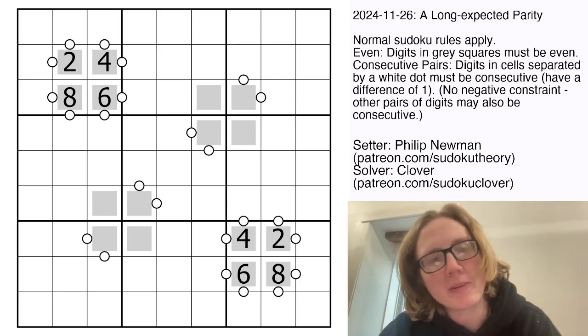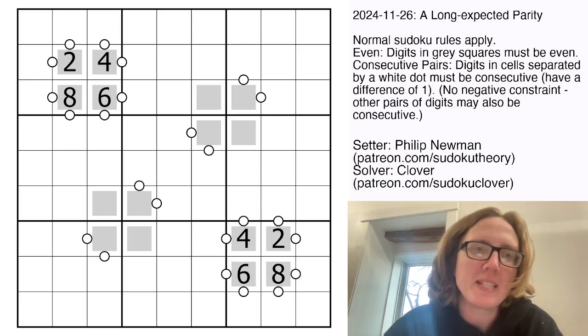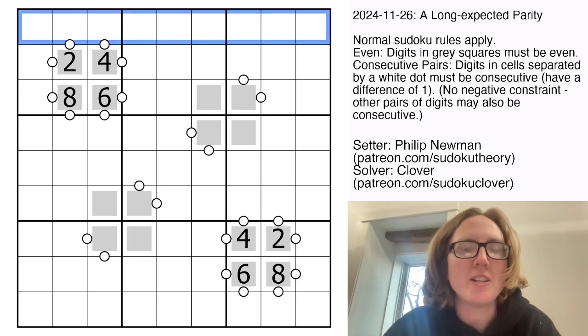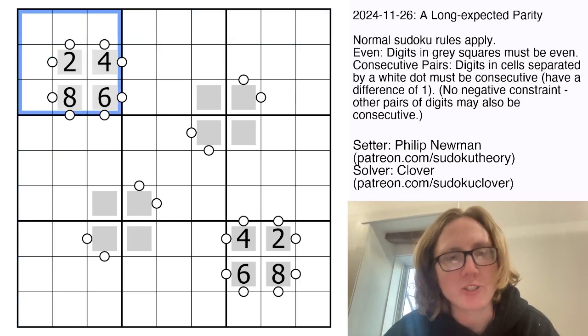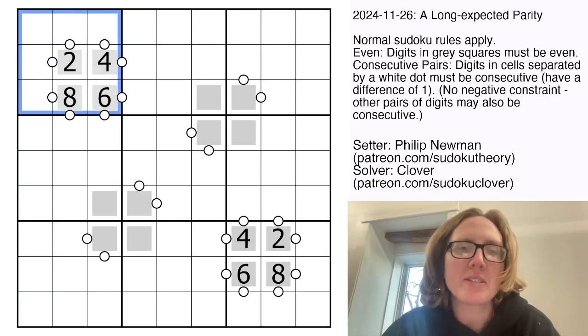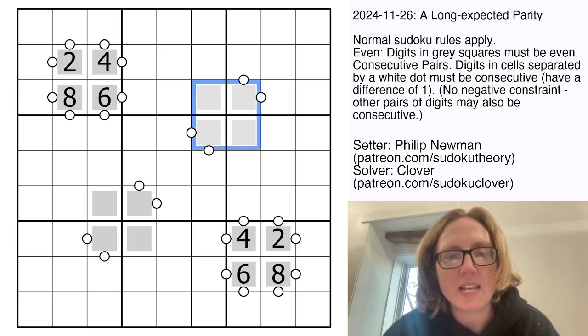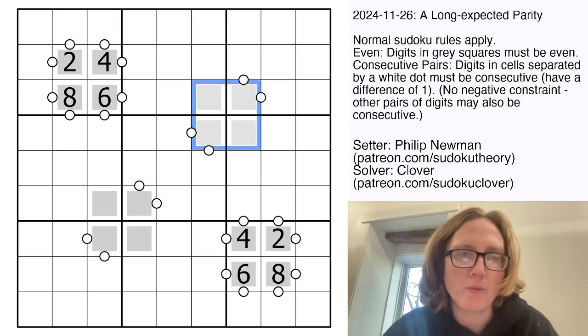So what are we doing? We have normal Sudoku rules, placing the digits 1 through 9 once each in each row, each column, and each outlined 3x3 region. We also have some gray squares, and every digit that goes in a gray square must be even, so 2, 4, 6, or 8.